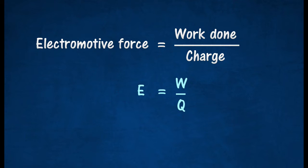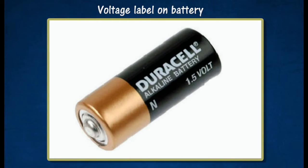Electromotive force, denoted by E, is measured in joules per coulomb or volts. The voltage label on the cell or battery indicates its electromotive force. The label 1.5 volt on a dry cell means 1.5 joules of electrical energy is produced for the whole circuit when 1 coulomb of charge flows through the circuit.